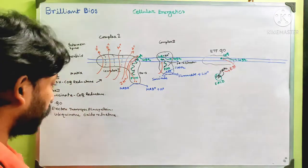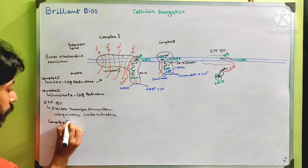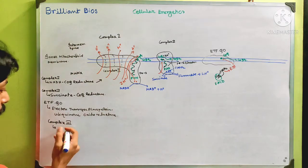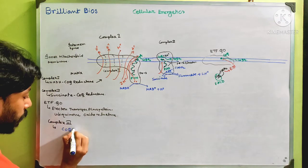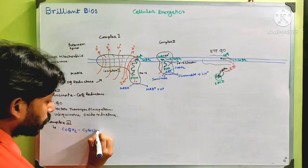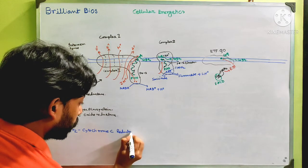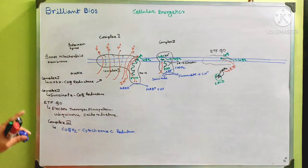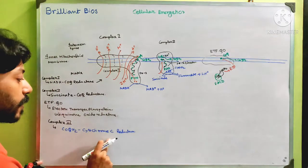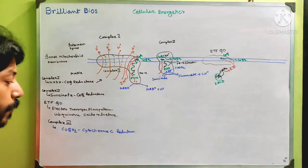Complex 3 is named in relation to CoQH2, so it is called CoQH2-cytochrome c reductase. As I mentioned in my previous videos, the first name in an enzyme implies the product that will be oxidized, and the last name implies the product that will be reduced. So here, CoQH2 — the dihydroquinone — will be oxidized, and cytochrome c will be reduced.